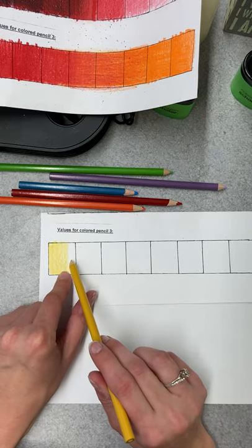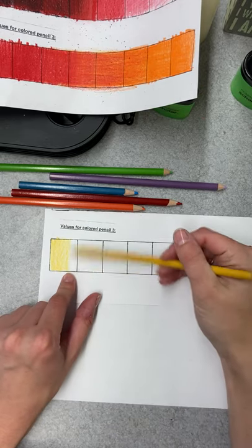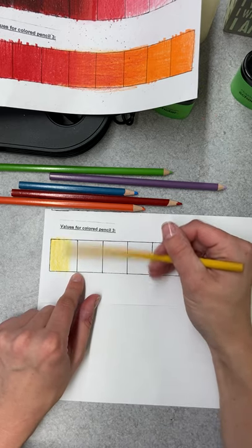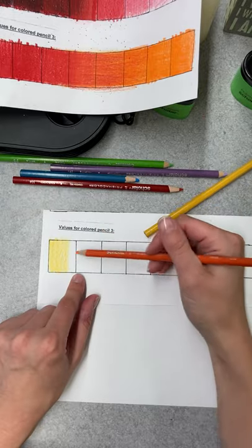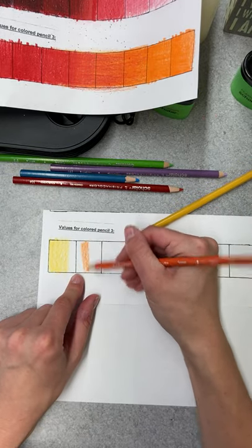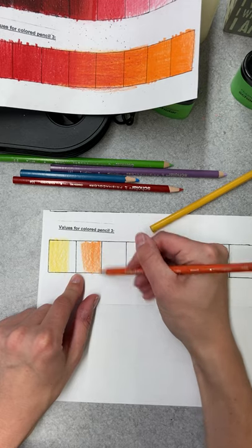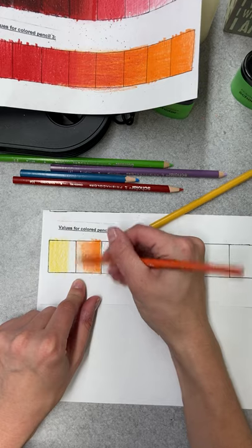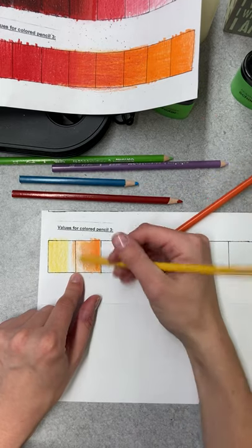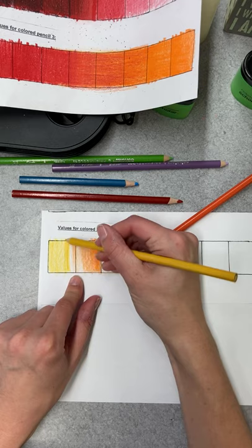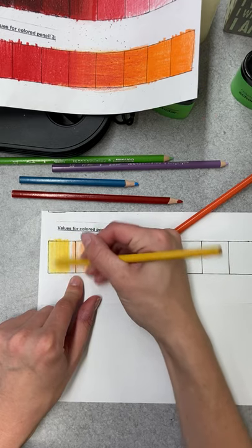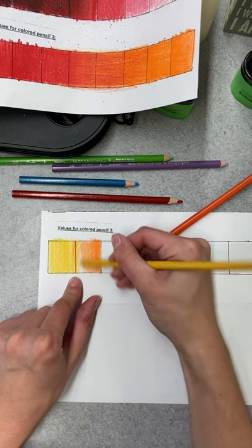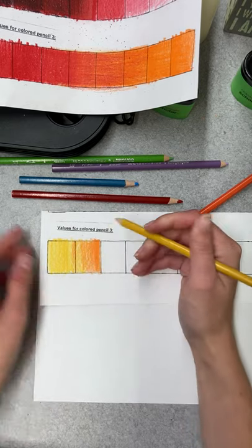I'm just gonna start with like, the blend happens in between each box. So for me, this is my orange box and I'm gonna make it super dark. I'm gonna go lighter and then kind of overlap that yellow box. The yellow is my lightest color, so I'm gonna have a little bit more pressure as it goes into the orange.